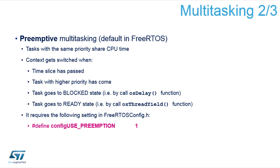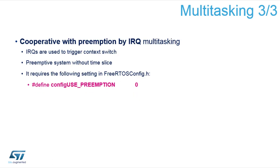Be careful about using non-reentrant functions; check the compiler and library documentation to see whether a function is reentrant or not. If you have no information about it, I discourage you from using preemptive mode. There is also a possibility to use cooperative mode with preemption by IRQ, meaning task switches normally happen when you give up CPU time, but they can also happen when an external interrupt fires and at the end of that interrupt a higher priority task is woken up, triggering a context switch. This gives a preemptive system without time slicing.